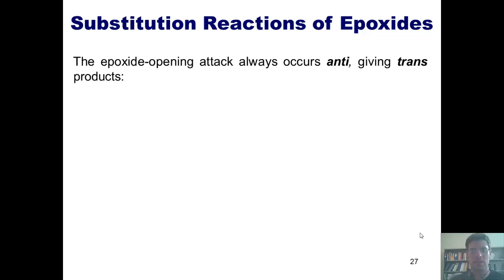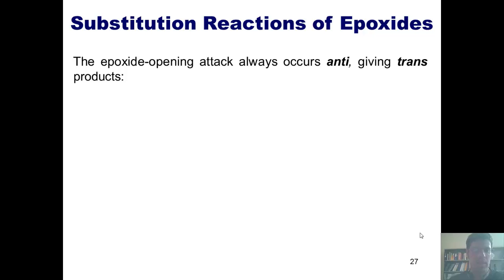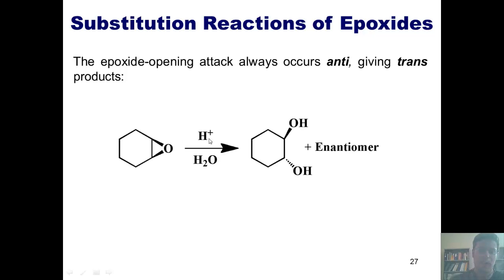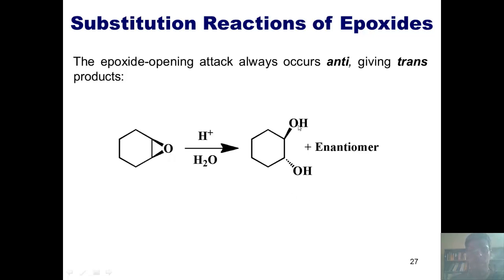I need to stress something. The epoxide opening attack — that is, the step where the nucleophile opens up the ring — always occurs anti, which gives trans products. For instance, if I took this epoxide and treated it with acid, the oxygen would get protonated to give me an OH+ right here, and then my water nucleophile would come in. As it comes into this lower carbon and pushes these electrons up into this oxygen, it has to come from the backside. After it gets deprotonated and neutralized, I end up getting these two OHs being trans to each other.